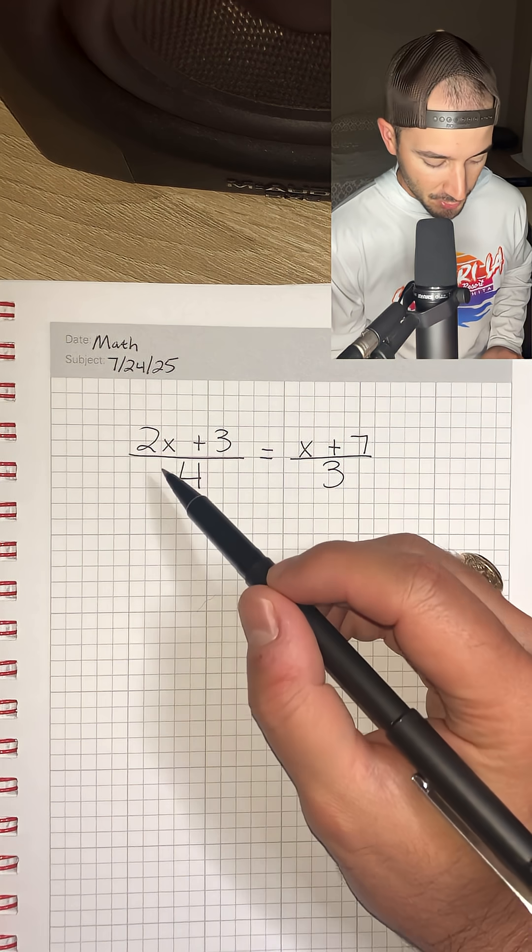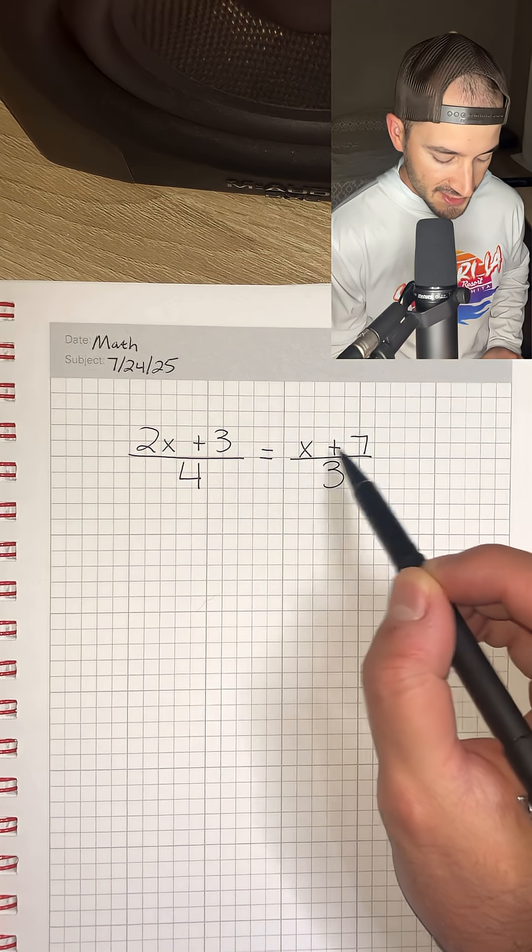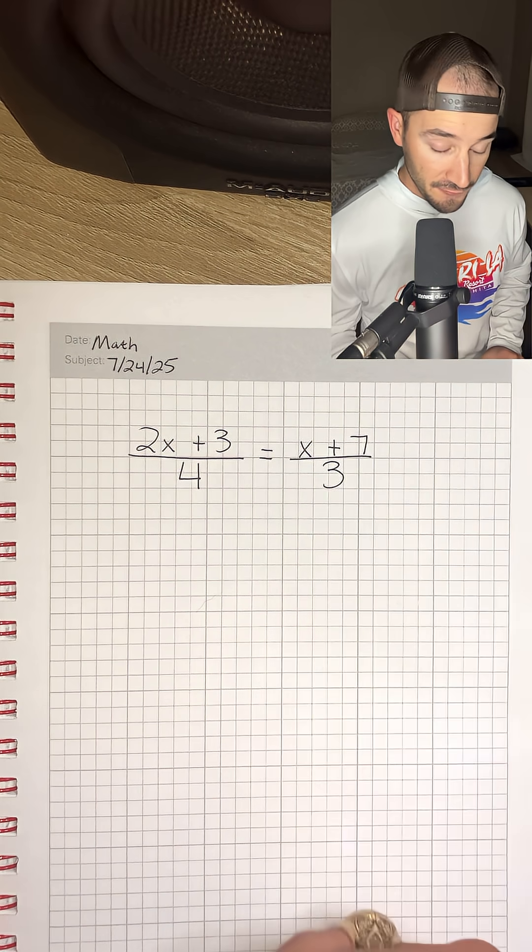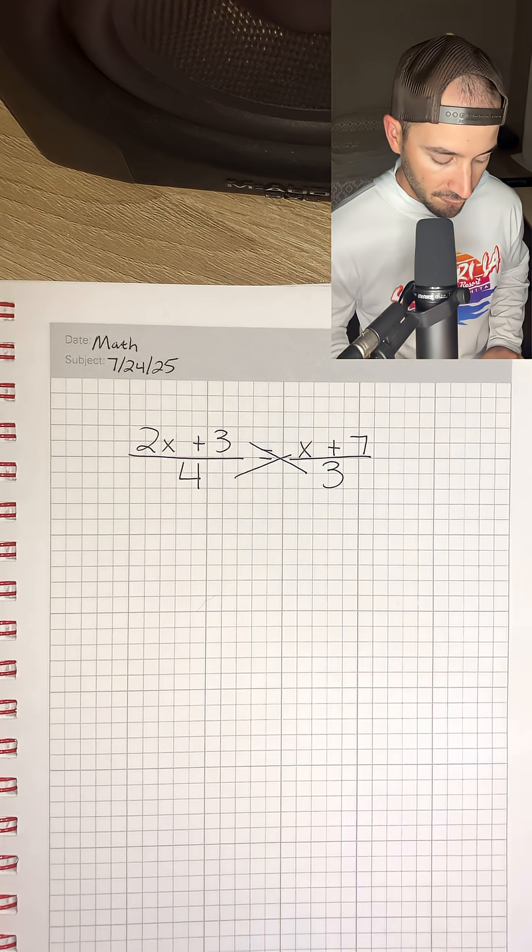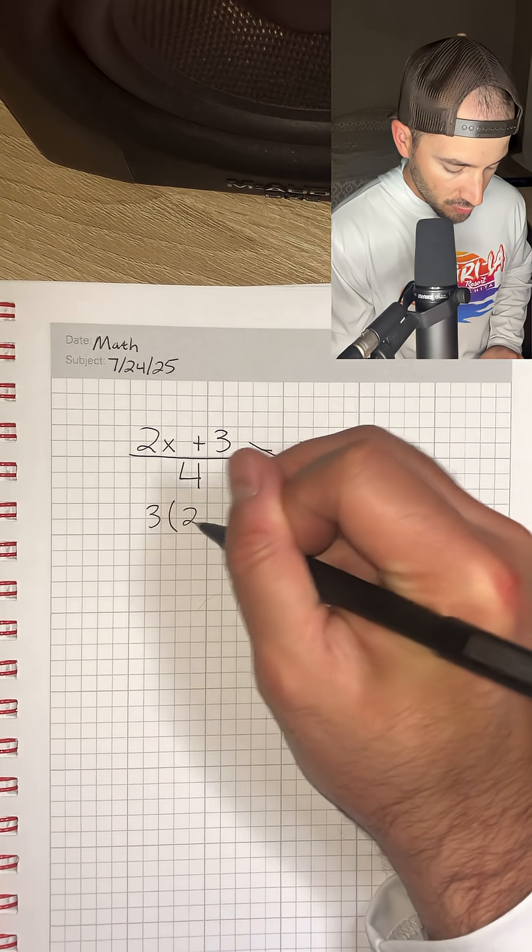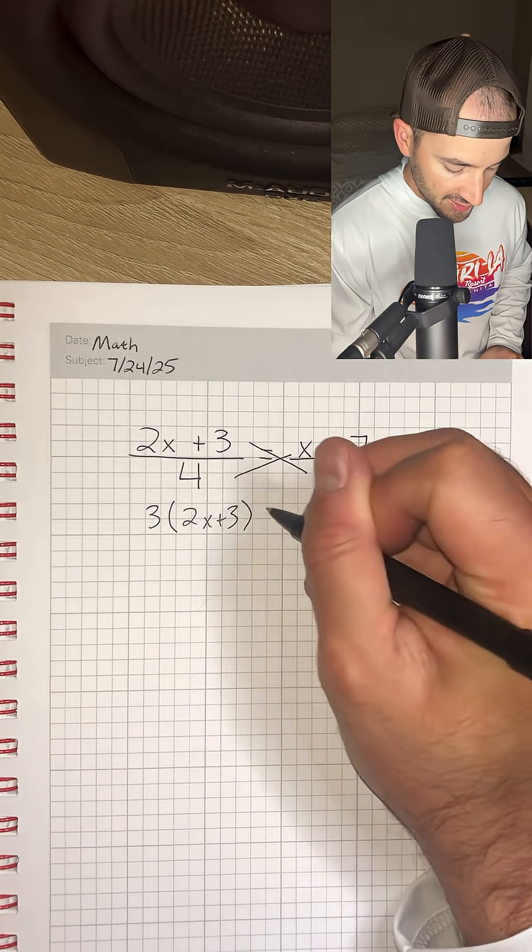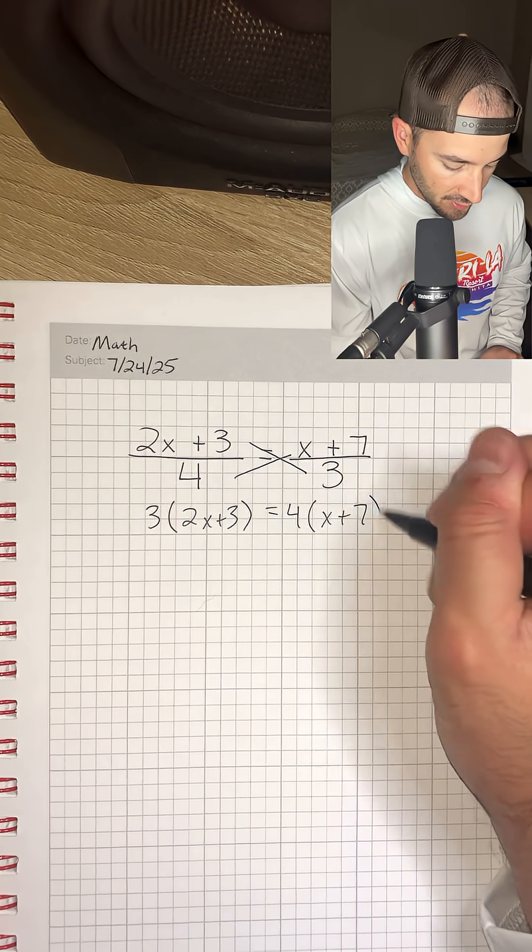Can you solve today's math problem? We have 2x plus 3 over 4 is equal to x plus 7 over 3. The first thing we're going to do is cross multiply to get rid of the fractions. That gives us 3 times 2x plus 3 is equal to 4 times x plus 7.